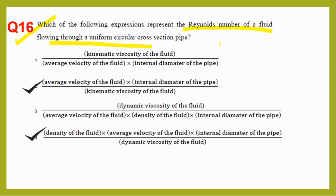Question sixteen asks which expressions represent the Reynolds number for a fluid flowing through a uniform circular pipe. The Reynolds number formula is ρvD/μ, where μ is dynamic viscosity. Option: density × velocity × internal diameter — correct. Option with dynamic viscosity in numerator — wrong. Average velocity × internal diameter / kinematic viscosity — also correct, since kinematic viscosity equals dynamic viscosity divided by density. The correct answers are options two and four.